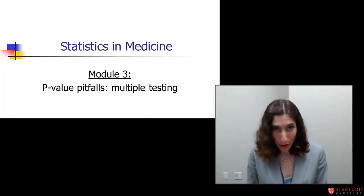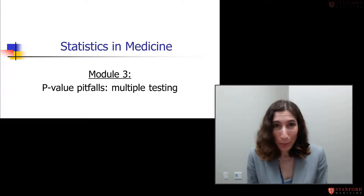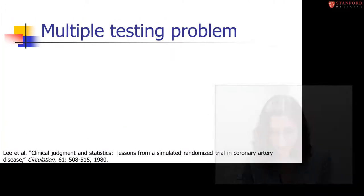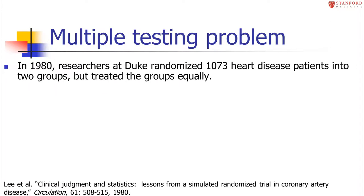The next p-value pitfall we're going to talk about is something called the problem of multiple testing. This problem is best illustrated with an example. This is one of my favorite studies in the medical literature. This is a 1980 study where some researchers at Duke University randomized about a thousand heart disease patients into two groups.